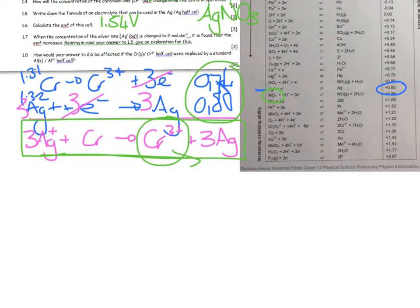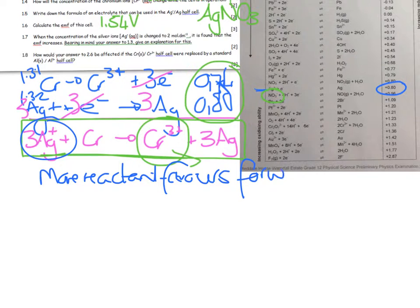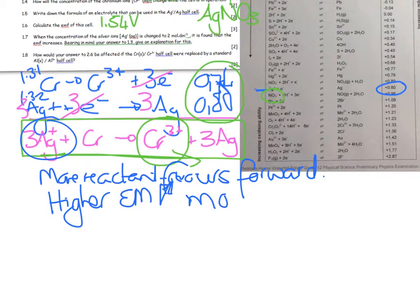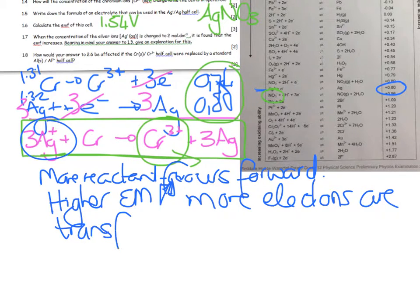You now need to discuss equilibrium because that's going to increase your EMF. We've put in more reactant, so increased concentration of reactant favours forward reaction. Therefore it will have a higher EMF because more electrons are transferring.